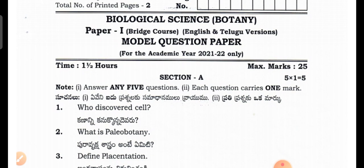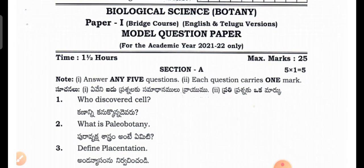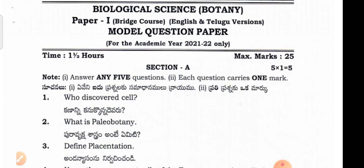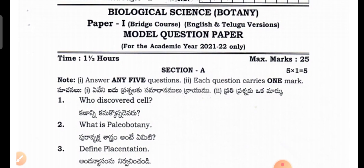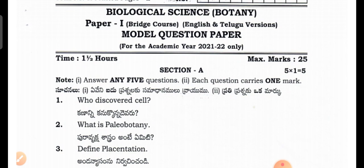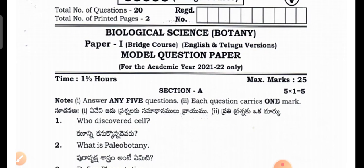The first priority is the model question paper. The biological sciences has 2 papers — botany and geology — and the biological sciences paper carries 25 marks.